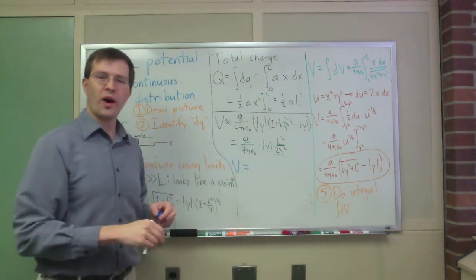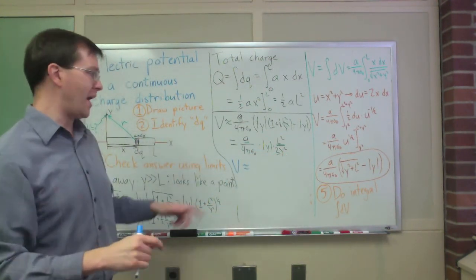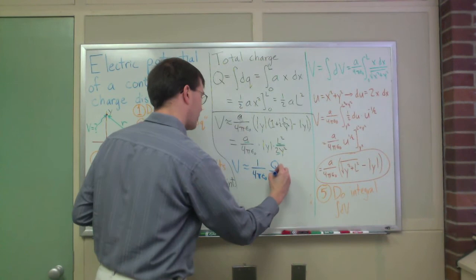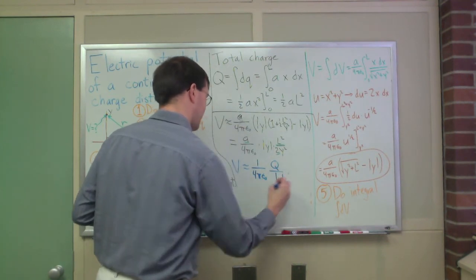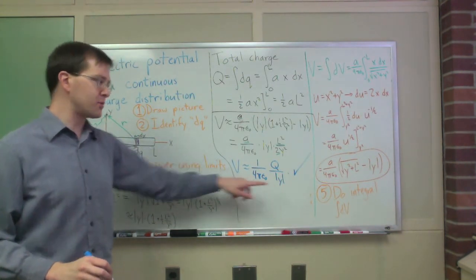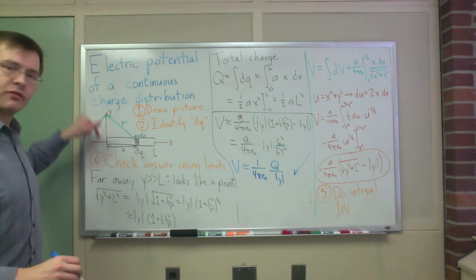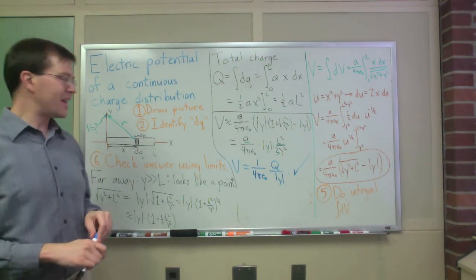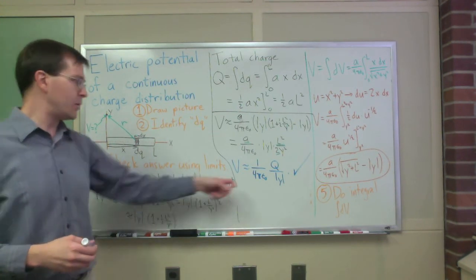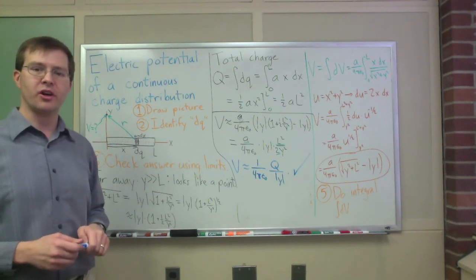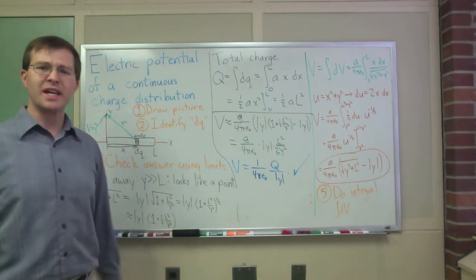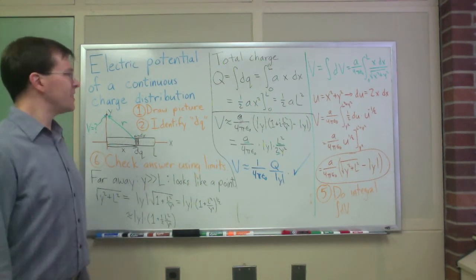We have a one half and an a and an L squared floating around. This tells us that V is approximately equal to, and what's absolute value of y over y squared for real y? It's just 1 over the absolute value of y. So this comes out to be one over four pi epsilon naught total charge Q over absolute value of y. Check mark, yay, because that is Coulomb's law for a point charge. If we're very far away, it reduces to exactly the Coulomb's law for a point charge. That makes me happy. That makes me think we've done this right, and we probably have the right answer.